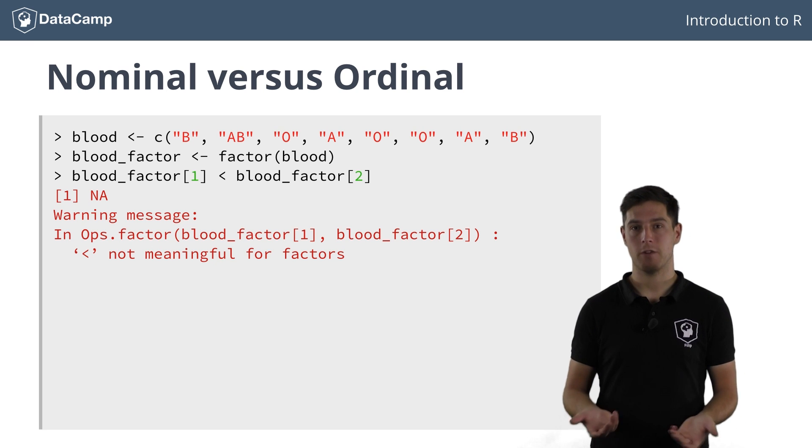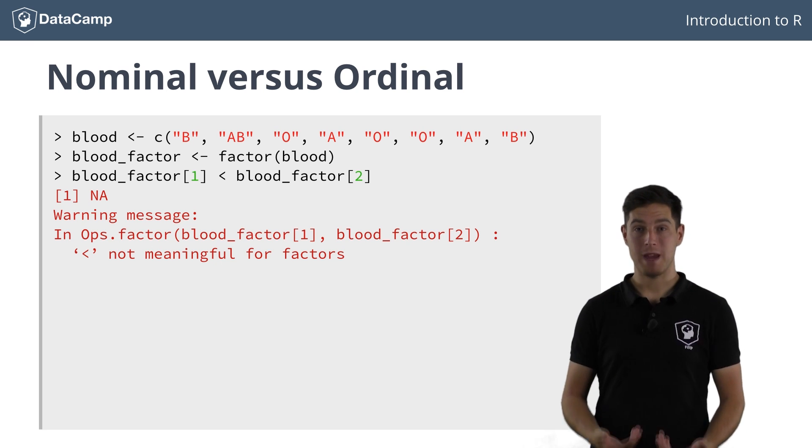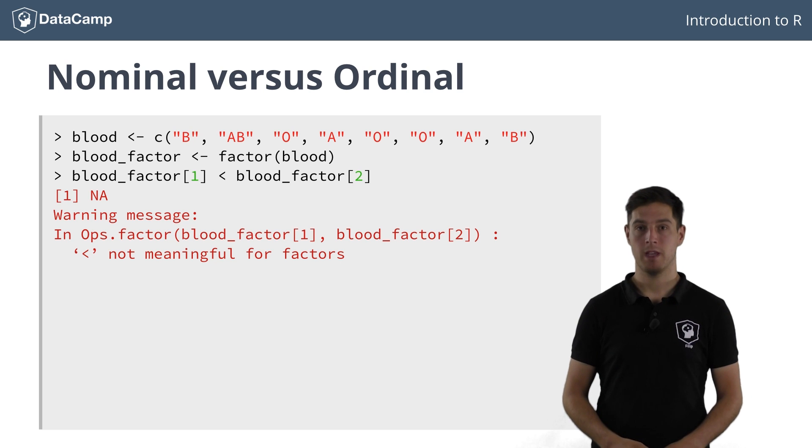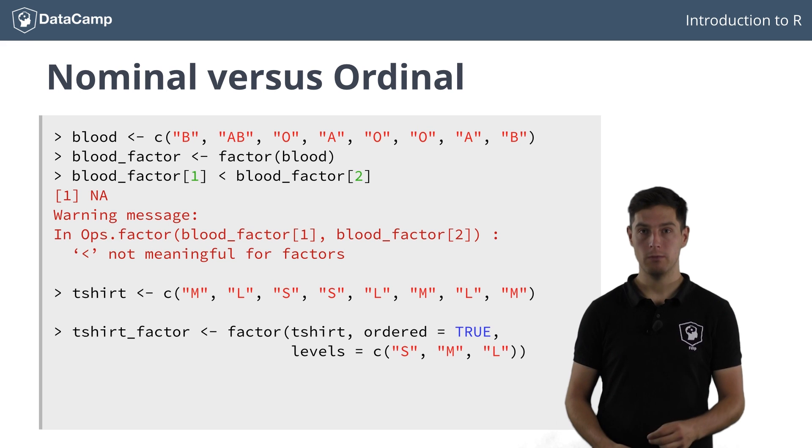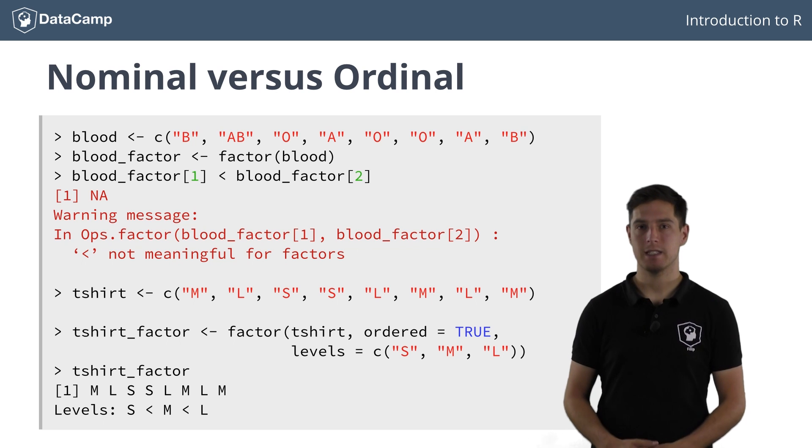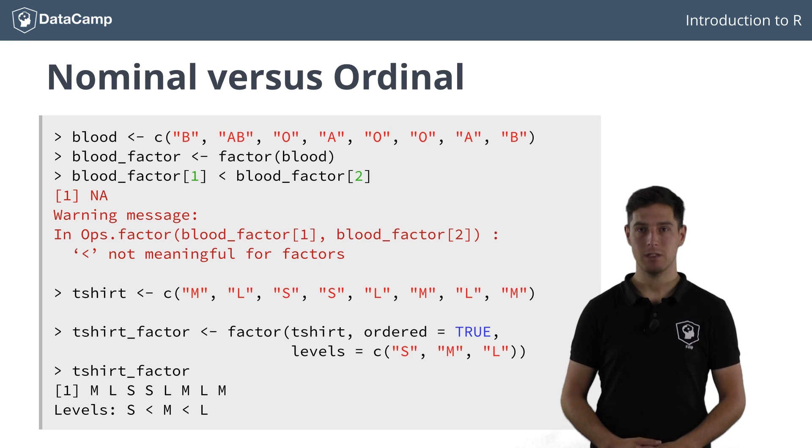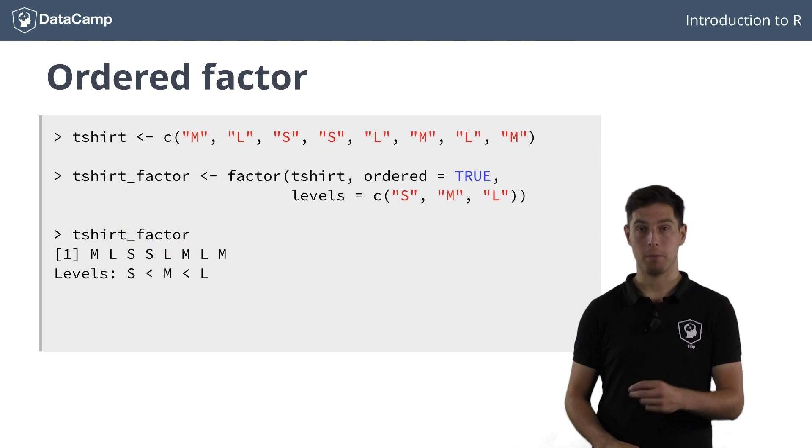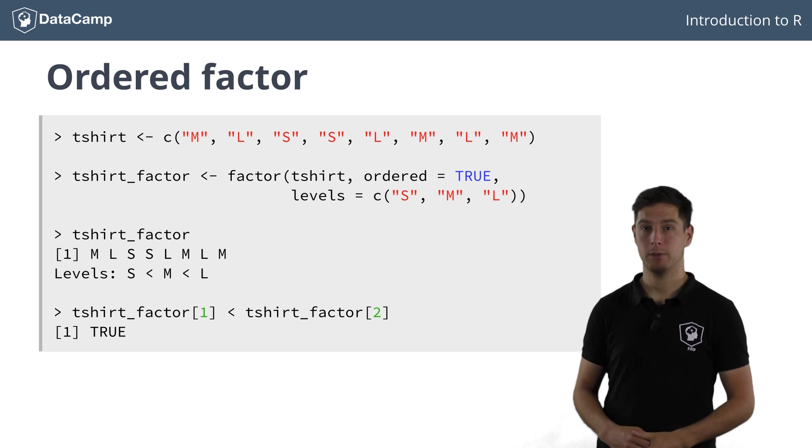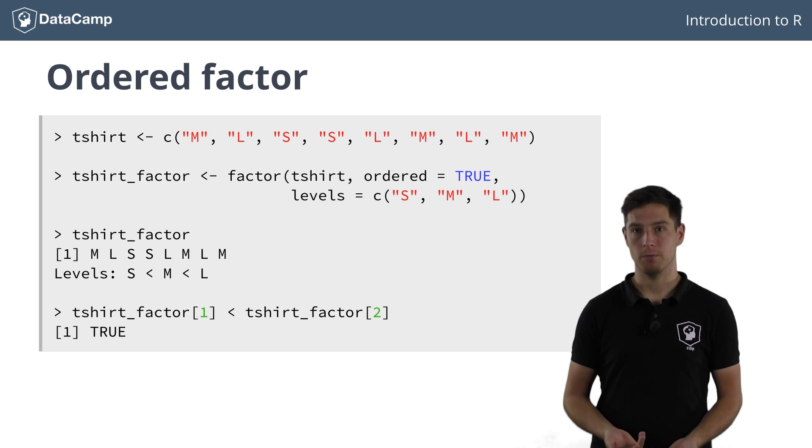Inside the factor function, you simply set the argument ordered to true and specify the levels in ascending order. Can you see how these less than signs appear between the different factor levels? This compactly shows that we're dealing with an ordered factor now. If we now try to perform a comparison, this call for example, we see that it evaluates to true, without a warning message this time, because a medium was specified to be less than a large.